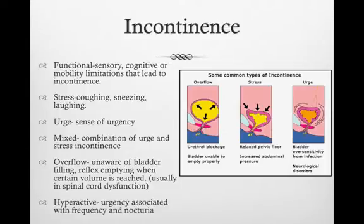Urinary incontinence can affect patients of any age, but it is very prevalent in the elderly. Causes can include problems with movement, removing clothing, or mental capacity — this is known as functional incontinence. Stress incontinence is caused by pressure from coughing, sneezing, or laughing. Urge incontinence has the patient voiding uncontrollably with a sense of urgency. Hyperactive incontinence involves urgency associated with increased frequency of urination and nocturia. Overflow incontinence is when the patient is unaware of their bladder filling, reaching emptying when a certain volume is reached, and is usually due to spinal cord dysfunction.